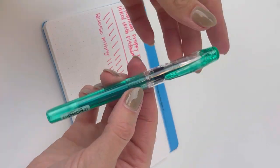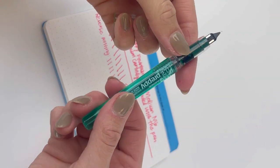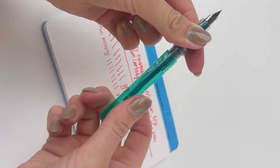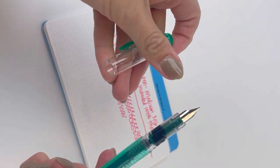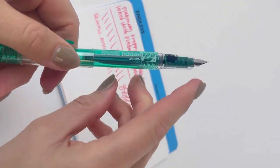You insert it into the section and push really firmly, and you will hear it snap into place. Then you'll want to give it a minute or two for the ink to work its way through the feed down to the nib.